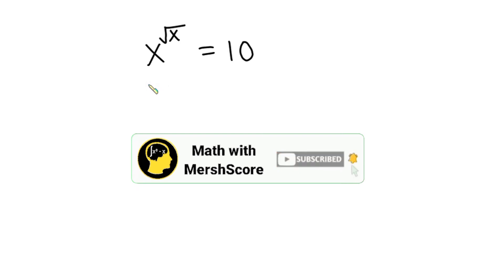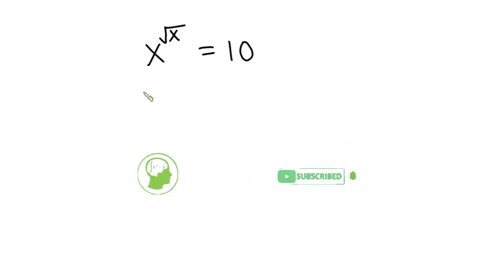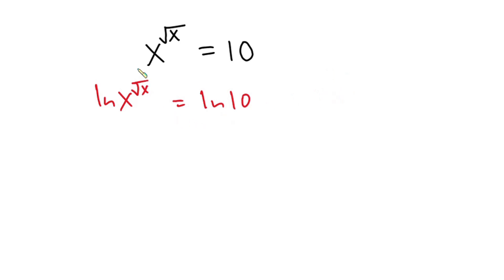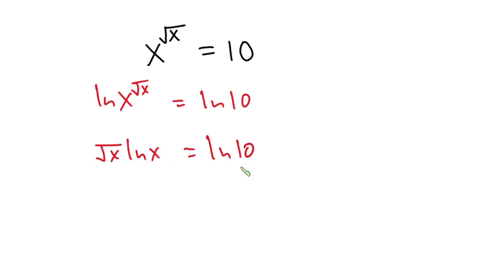Now let's get started. The very first thing I'm going to do is introduce natural log on both sides of the equation, so we have natural log of 10 on the right. You can also choose to introduce log, but I prefer natural log. So we have square root of x times natural log of x is equal to natural log of 10.